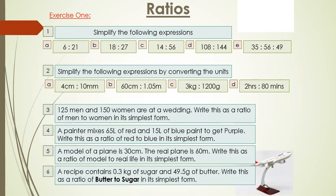Okay so you're going to all try and complete before you do the task on page 70, Exercise 1. So number 1, simplify the following expressions A, B, C, D, E. Then number 2, you're going to simplify the following expression by converting the units. So remember 4 centimetres and 10 millimetres.